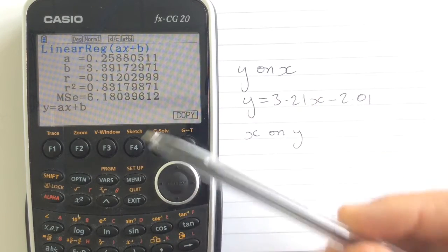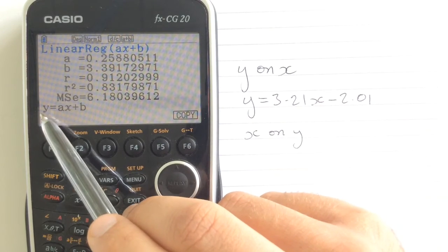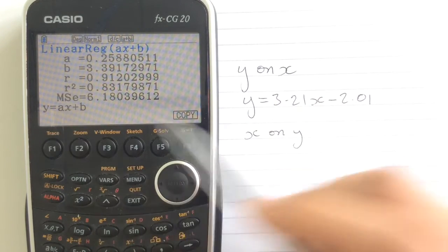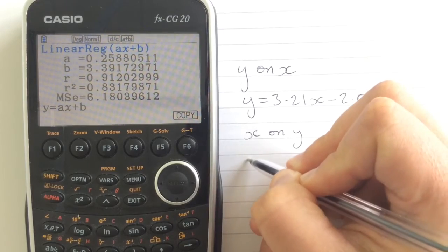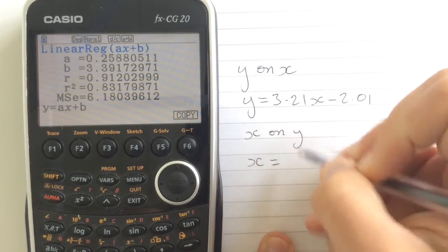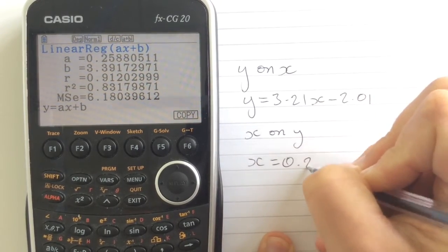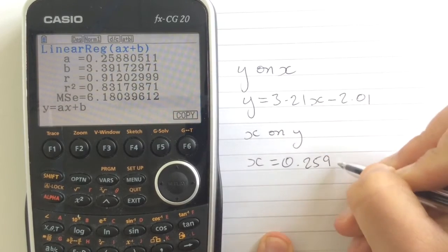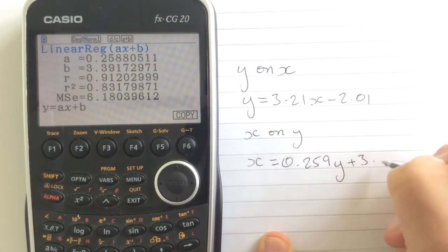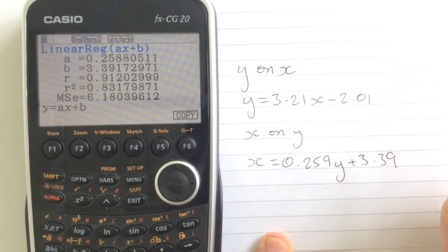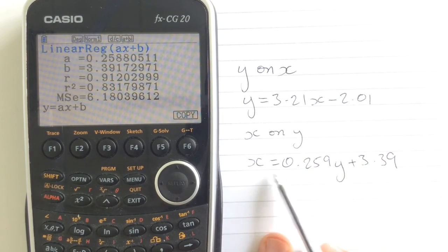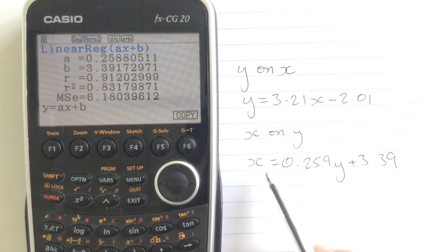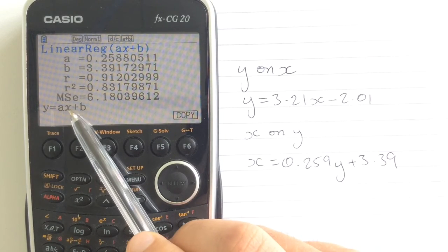There is one slight problem with this in that we actually want x equals ay plus b. So our equation should be x equals 0.259y plus 3.39. So we have got to remember to change the values there, x and y.